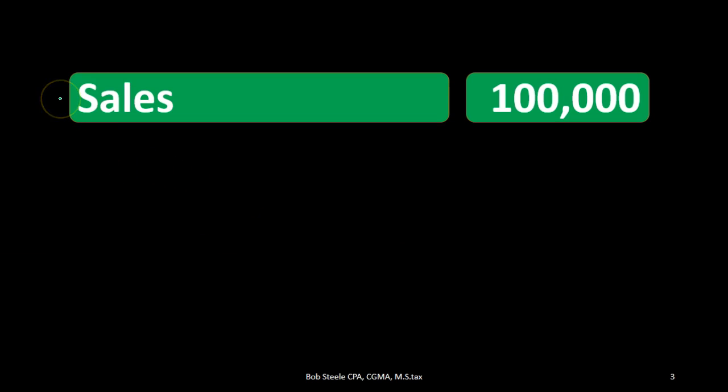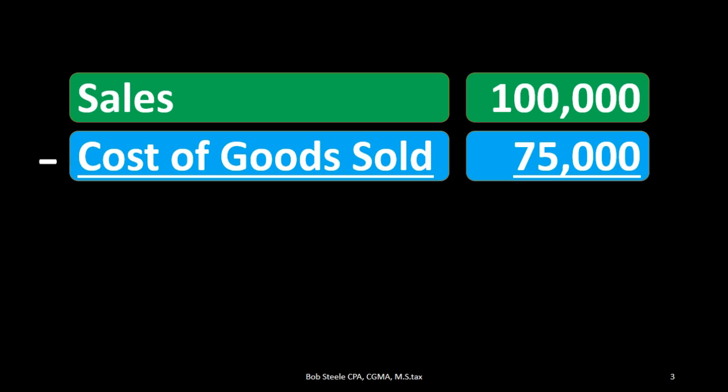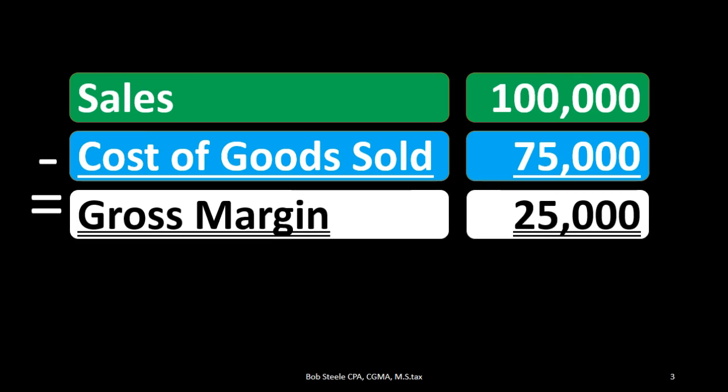We look at the calculation: we would say sales — again, sales here representing net sales, meaning the bottom line number on the sales section of the multi-step income statement — sales minus sales returns, allowances, and discounts, being $100,000 in this case. We then subtract out the cost of goods sold, the most important expense related to the inventory we are selling. That gives us the gross margin of $25,000.